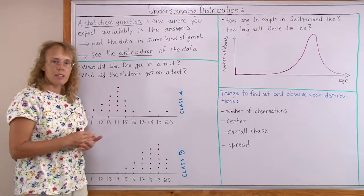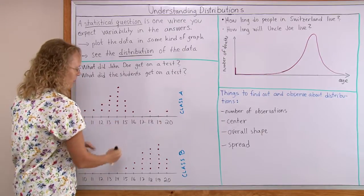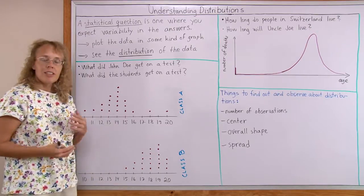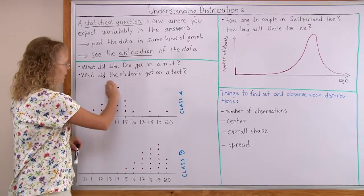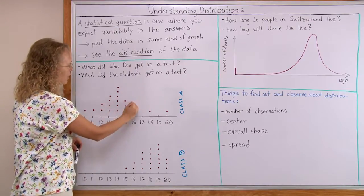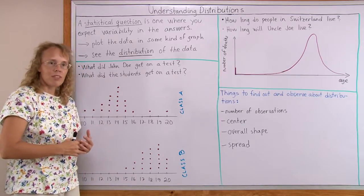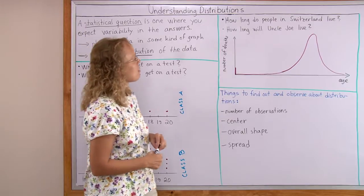So that's another thing we always want to study about distributions is the spread. How much has it spread? And another third important thing is the overall shape of the distribution. Like here we have a peak. Just here also we have a peak. That often happens that most of the data is concentrated around a peak. Let's look at this example here.